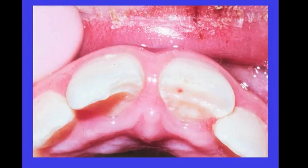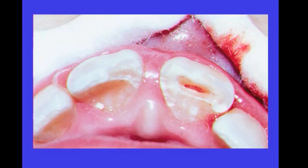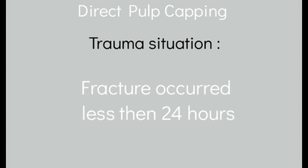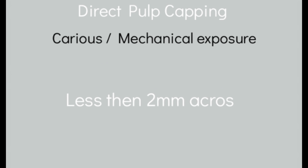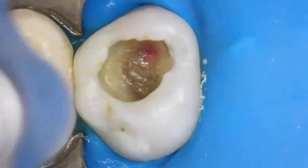The next procedure is direct pulp capping — calcium hydroxide placed directly on a healthy pulp exposure. It is the treatment of choice in a trauma situation where the tooth is fractured and pulp exposure occurred less than 24 hours ago. It's also used for a carious or mechanical exposure less than 2 mm across — essentially a pinpoint exposure where you've gone slightly too deep.